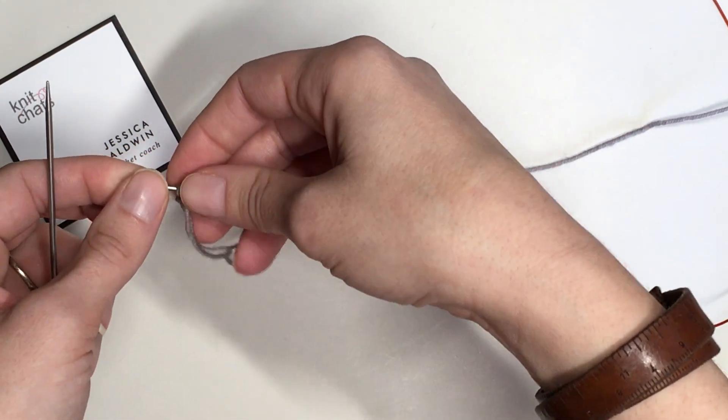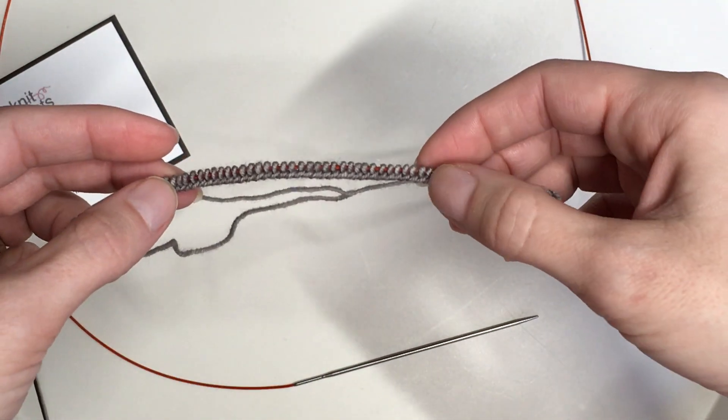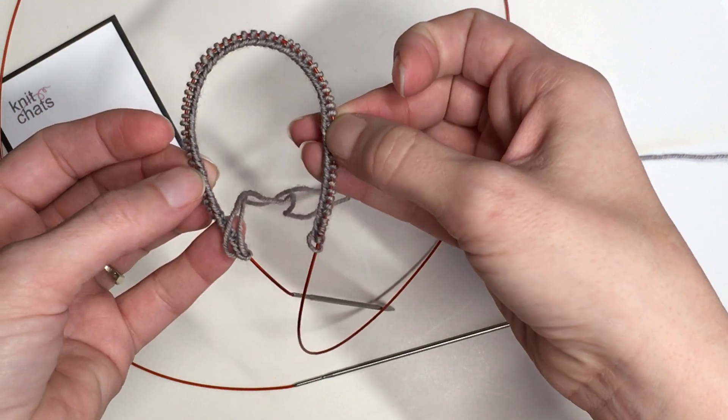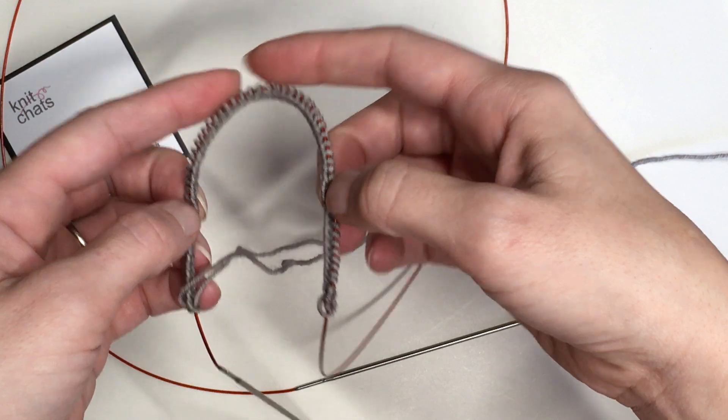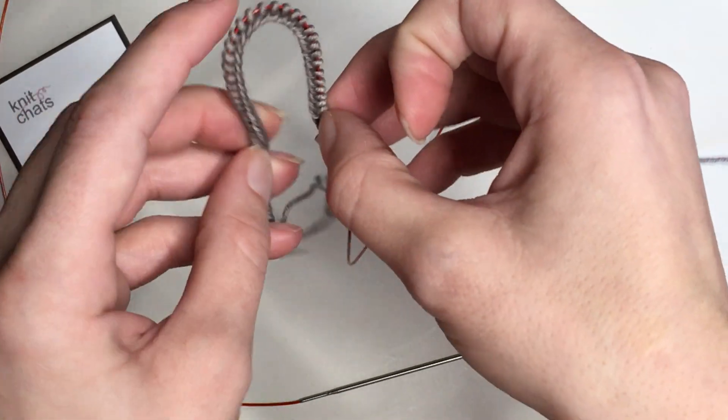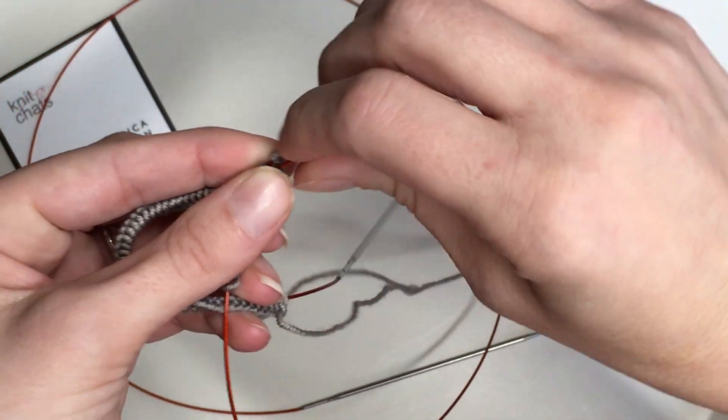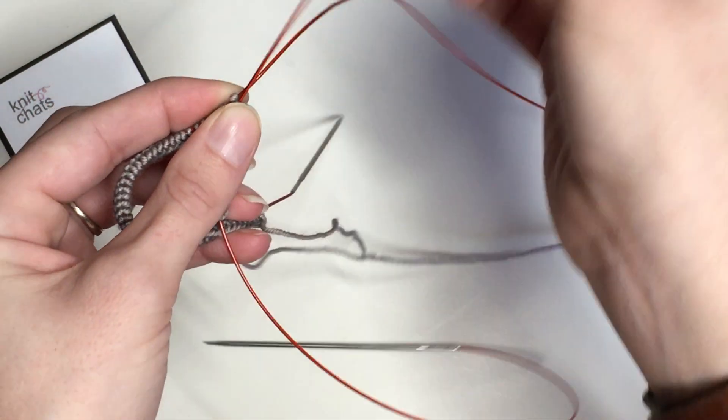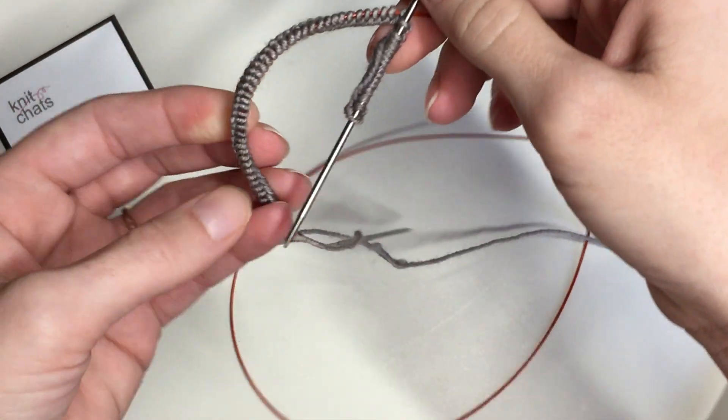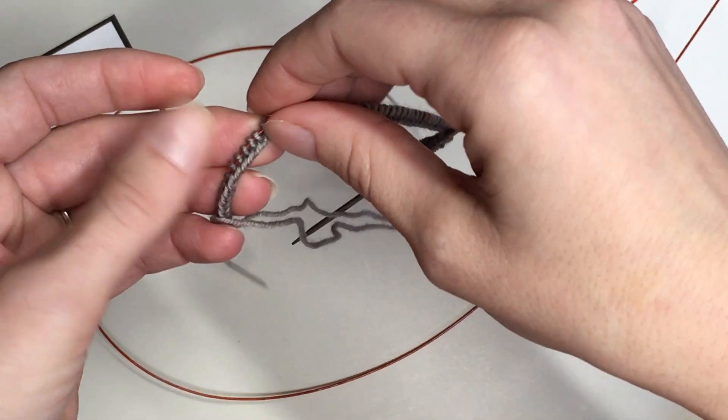We're going to slip our stitches onto the cord and I usually like to choose a quantity like this so that I have maybe the first quarter and the last quarter and the middle half. It doesn't have to be perfect. Pinching my cord and bringing it through. I'm going to pinch my cord about here.